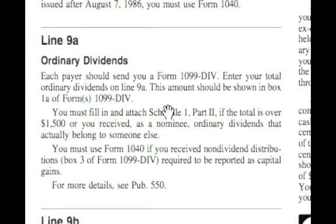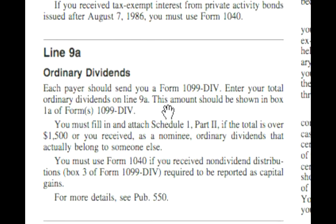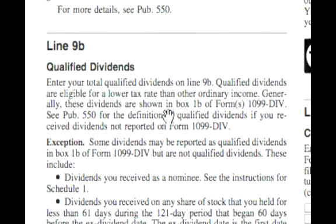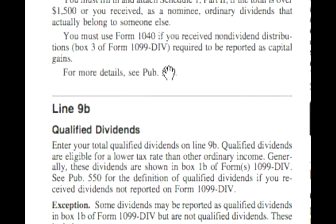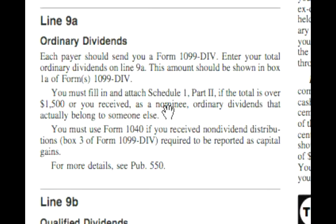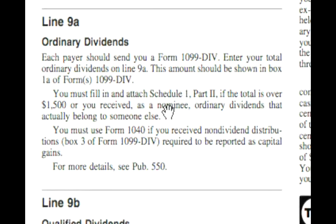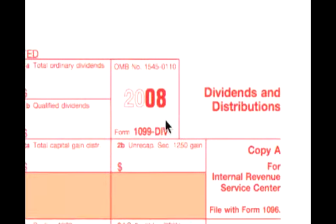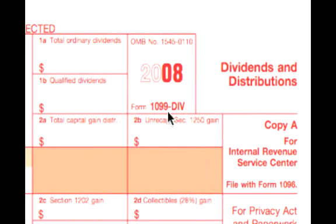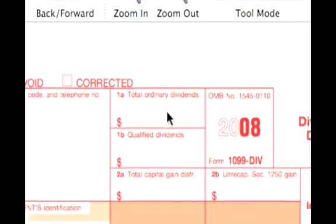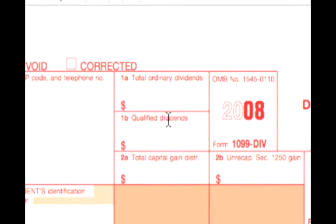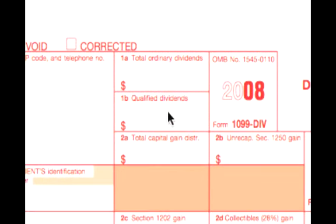Now we're going to talk about line 9A ordinary dividends, and we'll also talk a little bit about line 9B qualified dividends. You'll get a Form 1099-DIV from each payer, which is similar to the 1099-INT we just looked at. Box 1A reports your ordinary dividends, and box 1B reports your qualified dividends.